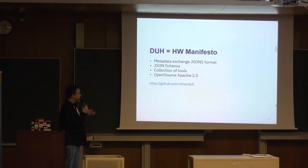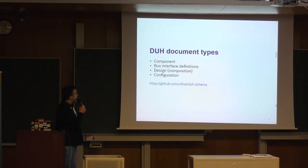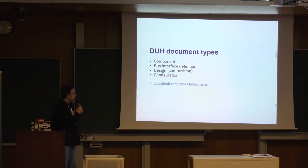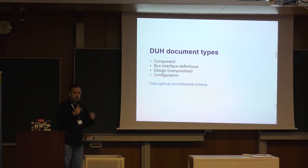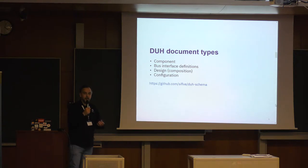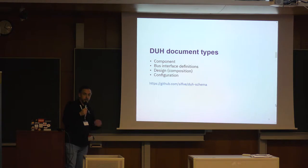It also comes with a collection of tools. We have a few document types — we call them DOOH documents. Each JSON file has a special format and may be one of several types. Typical design documents would be: a component, which describes a particular IP block; a bus interface definition, like AXI, APB, Wishbone, or TileLink; and a design, which is a composition of components and maybe other designs — so it can be very compositional.